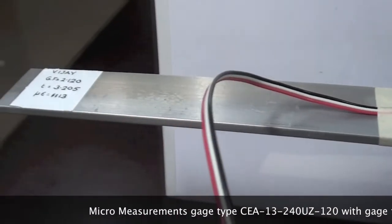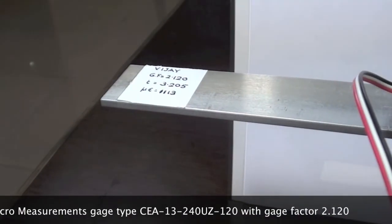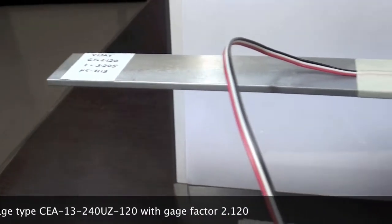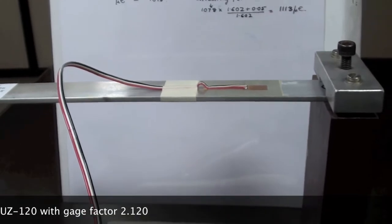A Micromets CEA type strain gauge is bonded to it and connected to a model P3 strain indicator.